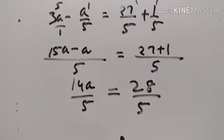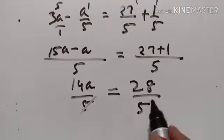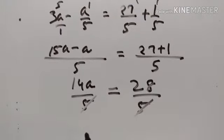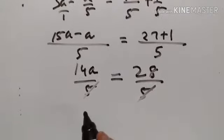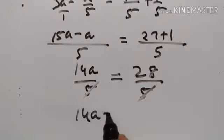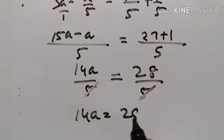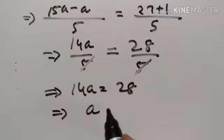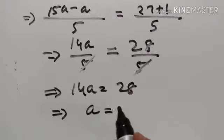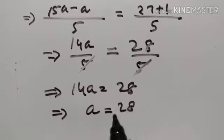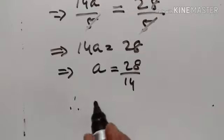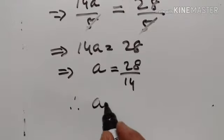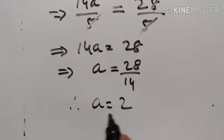When we multiply both sides by 5, the 5 cancels out. So 14A is equal to 28. Therefore A is equal to 28 divided by 14, which gives A is equal to 2.